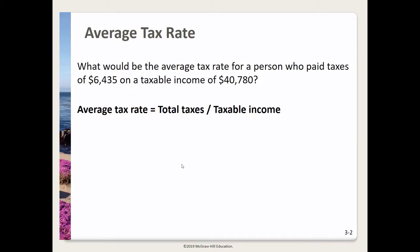In the next problem we're going to be calculating the average tax rate, which is different than the marginal tax rate. What would be the average tax rate for a person who paid taxes of $6,435 on a taxable income of $40,780? The formula for the average tax rate is the total taxes paid divided by the taxable income. So we'll take $6,435 divided by $40,780 and we get an average tax rate of 15.78 percent.